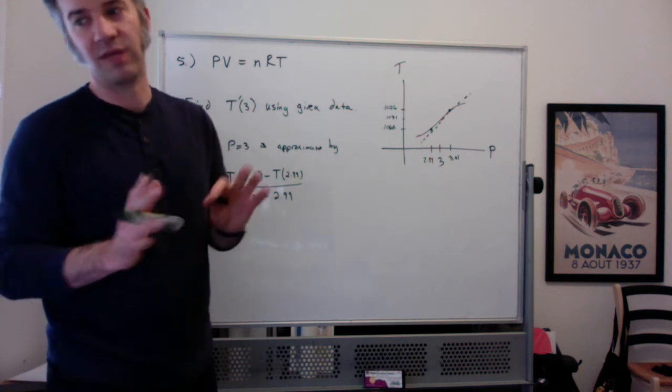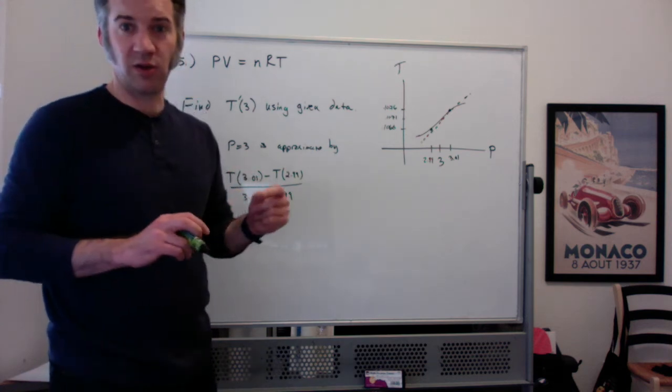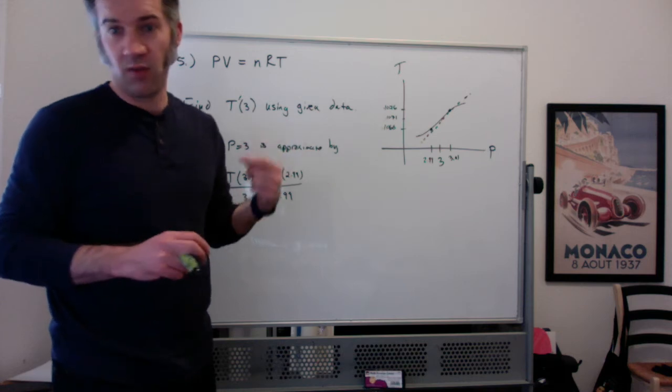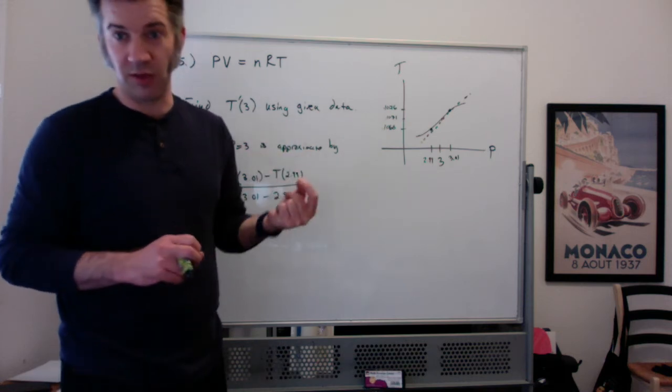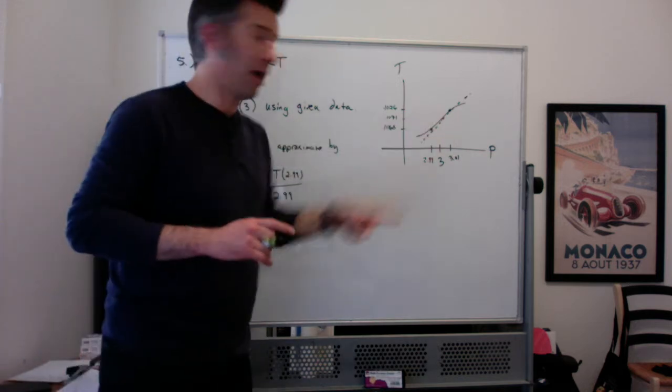Well, there's reasons I don't want to get too deeply into, but essentially the idea is if you pick the points closest to the left and right of 3, which are at 2.99 and 3.01, those are going to give you the best estimate if you calculate the slope between those two points.